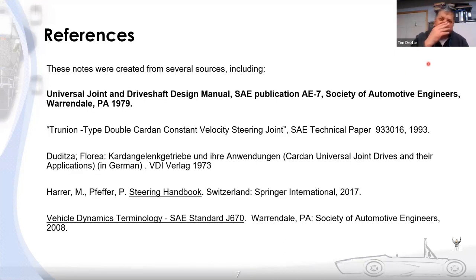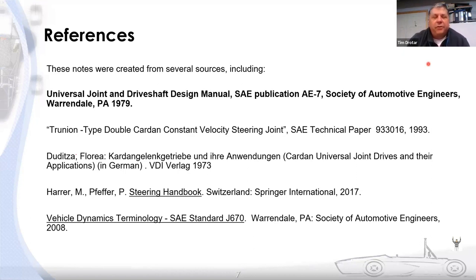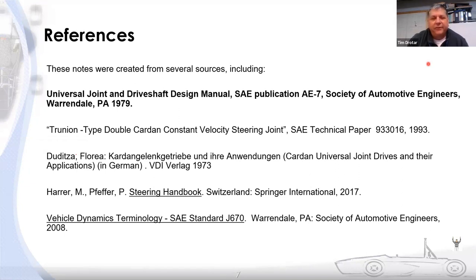These notes were created from several sources. A really good reference on cardan joints — also known as universal joints — is the SAE Universal Joint and Driveshaft Design Manual. All the math and design information you need to design and apply cardan joints, double cardan joints, and constant velocity joints is in there. Although it specifically covers driveshafts, the physics and math still apply to what we're looking at here: the upper steering system.